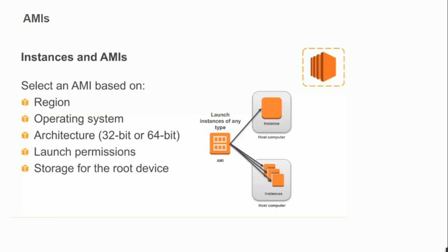What is AMI? In the classic version, when we set up a new physical machine, we require an operating system — whether via CD, DVD, USB, or network installation. In AWS, we have the concept called AMI — Amazon Machine Image. For example, if you want Ubuntu, you have multiple options: Ubuntu 22, 20, 18, 16. If you want Windows Server, there are multiple options: Server 2022, 2019, 2016, etc. AMI is essentially the operating system image for your EC2 instance.